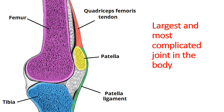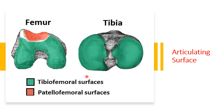The capsule of this joint is attached to the margin of the articular surface. It is absent in front for the pouching of the synovial membrane, forming a bursa called the suprapatellar bursa. There are two articulating surfaces: the first is called the tibiofemoral surface, between the plateau of the tibia and the condyles of the femur. The other surface is called the patellofemoral surface, where the patella articulates.